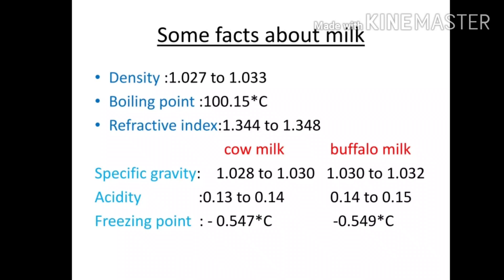The freezing point of cow milk is minus 0.547 degrees Celsius and buffalo milk is minus 0.549 degrees Celsius. These are very important topics.